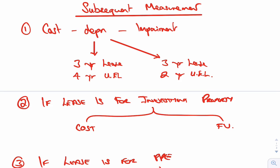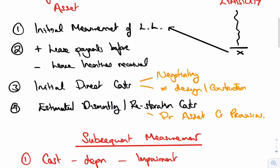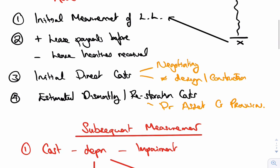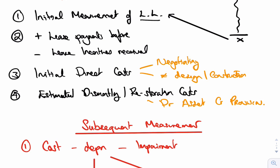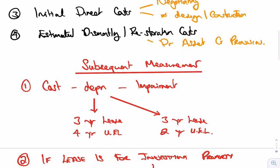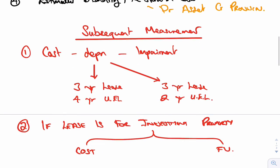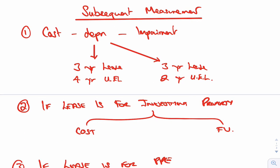Let's now have a quick look at the subsequent measurement of the right-of-use asset. If you remember, the right-of-use asset initially is whatever the liability was, add on any lease payments before take-off, lease incentives received, add on the initial direct costs and dismantling costs. Now we're looking at subsequent measurement — we should use the cost model and then take off depreciation.